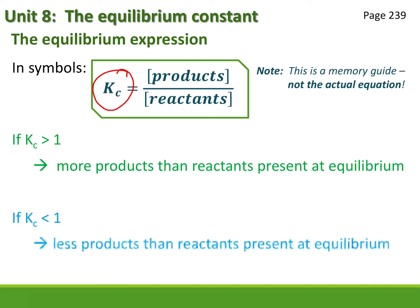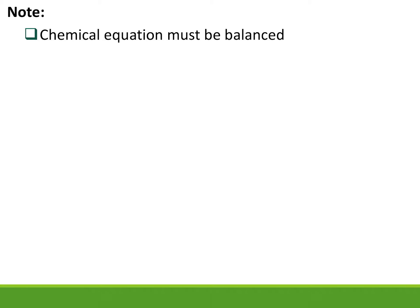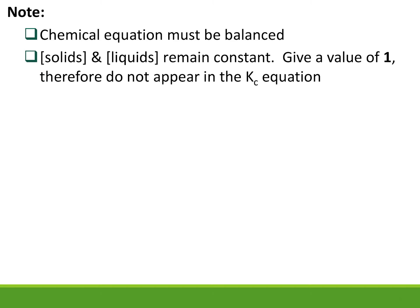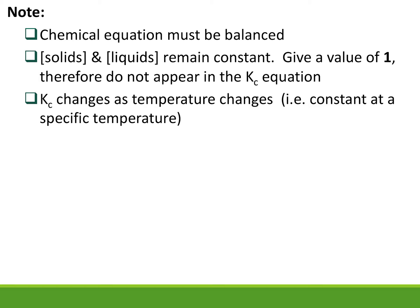Number one: we can only do these calculations when we have a balanced chemical equation. Number two: if we have solids and liquids, their values remain constant, so we give them a value of one and don't include them in our Kc expressions. Kc is temperature dependent — if the temperature changes, the value of Kc also changes. When you change pressure or concentration in an equilibrium system, once the new equilibrium is established you keep the same Kc value, unless you've changed the temperature.